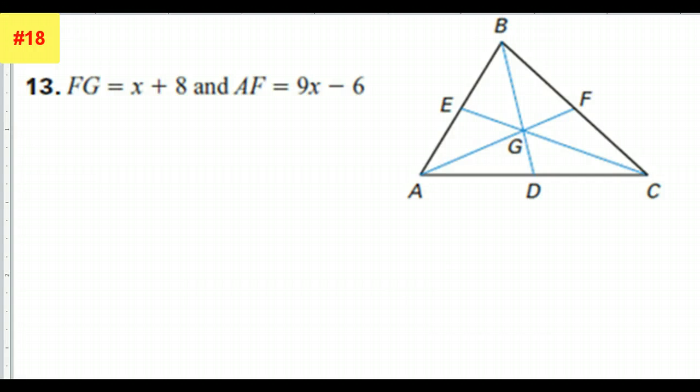Someone had asked me to do number 13. FG is x plus 8, so here's FG, and that is x plus 8. And then AF is 9x minus 6. So AF is all of this, and that is 9x minus 6.